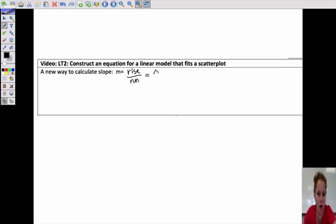And that we also call the change in the y over the change in the x. When we did tables, we talked a little bit about the change in the y and the change in the x. And how we can get that change in a scatter plot is we can take two points. So let's say we have two points. We're going to name them x1, y1, and the second point is going to be x2, y2.